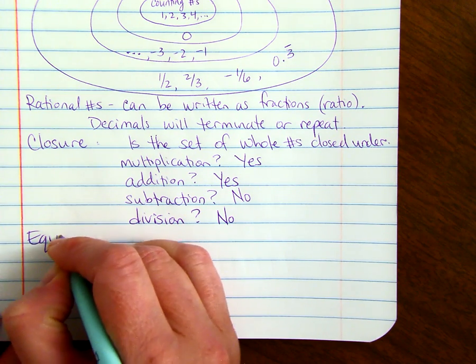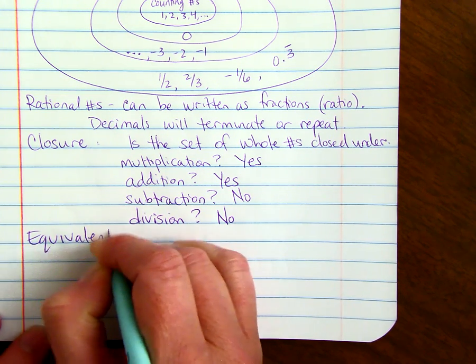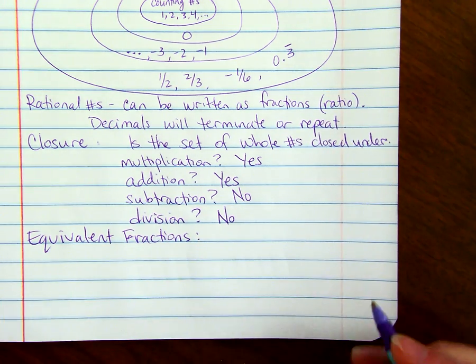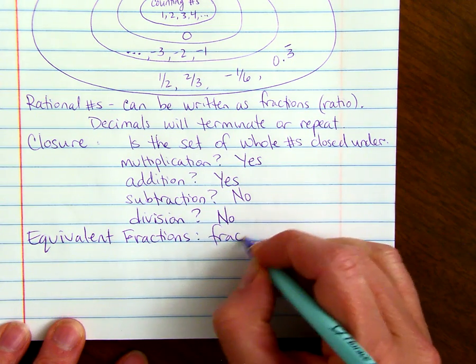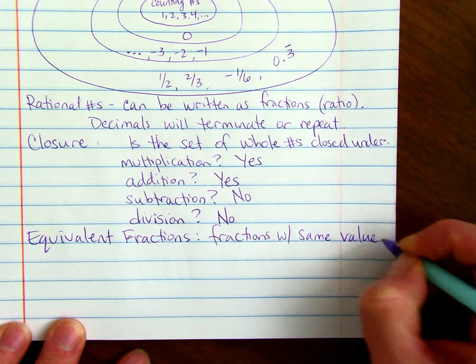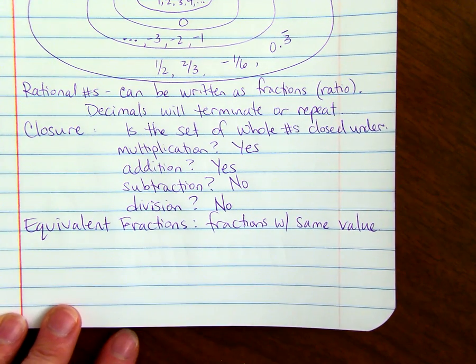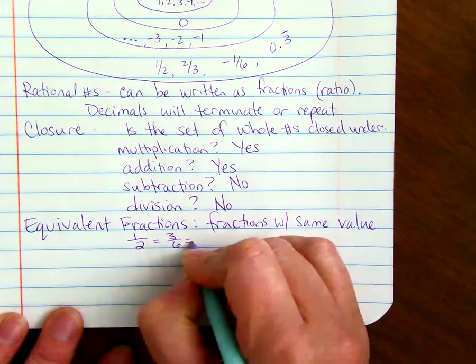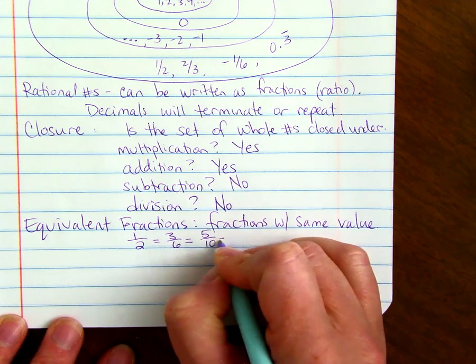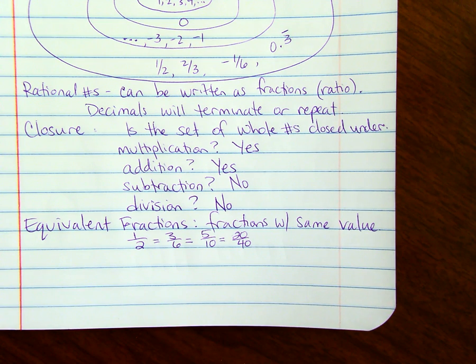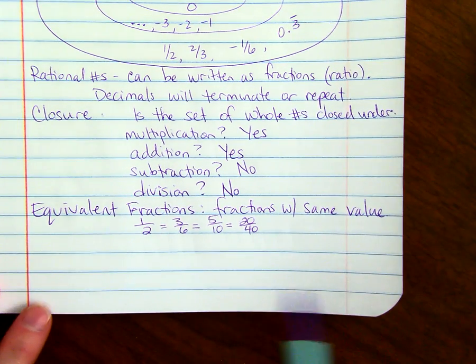Equivalent fractions are just fractions with the same value. They may look different, but when reduced, they'll be the same. For instance, one-half is equivalent to three-sixths, is equivalent to five-tenths, is equivalent to twenty-fortieths, and so on. If they have the same value, all of these, when reduced, will be one-half, then they're called equivalent fractions.